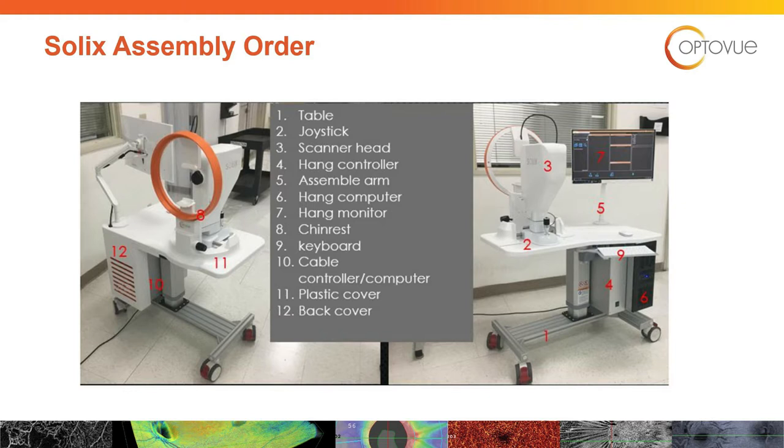Assemble the monitor arm and attach to the table, then hang the computer. Then hang the monitor. Assemble the chin rest. Place the keyboard and mouse, including the dongle for the mouse. Then cable the controller and computer. Attach the plastic cover over the joystick assembly and apply the back cover.